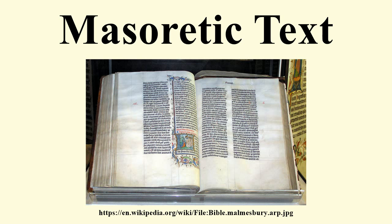According to Lawrence Schiffman, 60% of the Qumran scrolls can be classed as being of Proto-Masoretic type, and a further 20% Qumran style with bases in Proto-Masoretic texts, compared to 5% Proto-Samaritan type, 5% Septuagintal type, and 10% non-aligned. Joseph Fitzmyer noted that such ancient recensional forms of Old Testament books bear witness to an unsuspected textual diversity that once existed, and that the differences in the Septuagint are no longer considered the result of a poor or tendentious attempt to translate the Hebrew into Greek. Rather, they testify to a different pre-Christian form of the Hebrew text. Some of the fragments conforming most accurately to the Masoretic text were found in Cave 4.